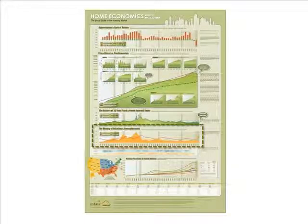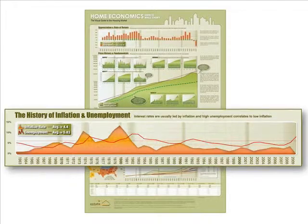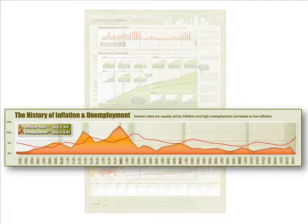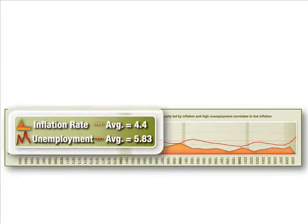In this segment, we'll look at some of the relationships between inflation and unemployment, and in turn, how these relate to the housing market. Over the decades covered here, inflation has averaged 4.4%, and unemployment falls under 6%.